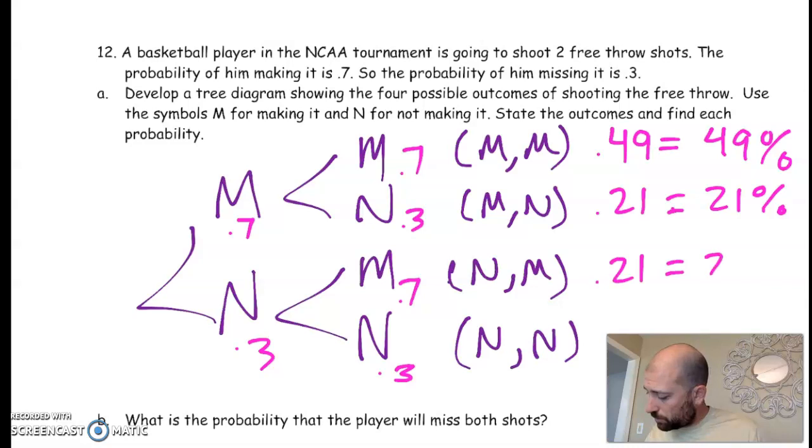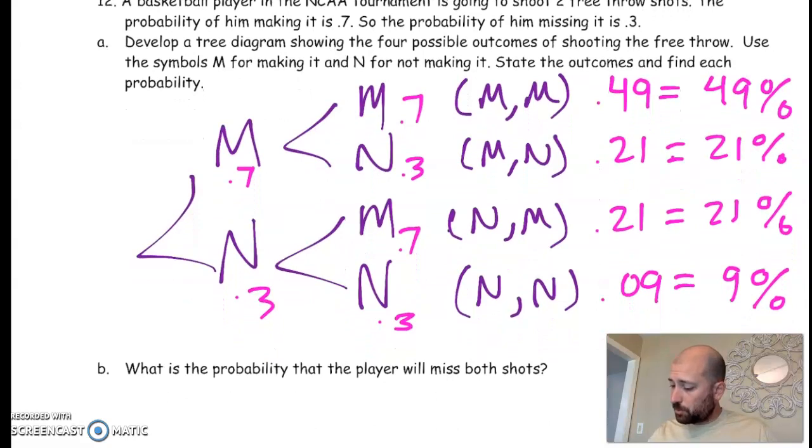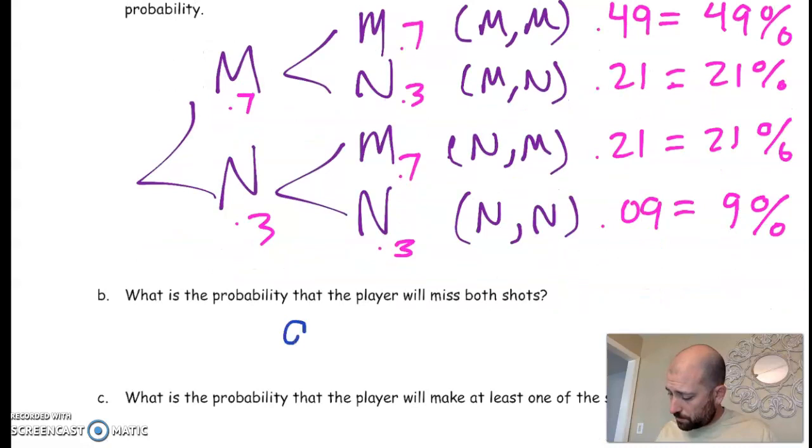What is the probability you're going to miss both shots? Well, that probability is nine percent. That's the bottom answer, N and N. What's the probability to make at least one shot?